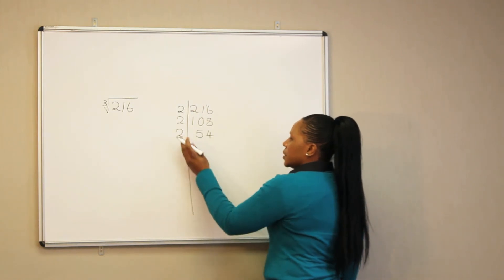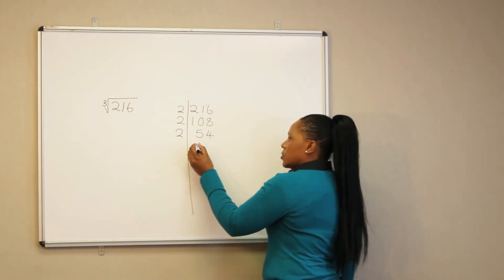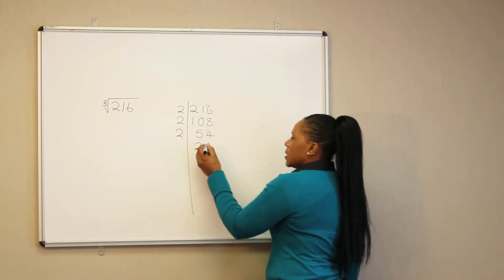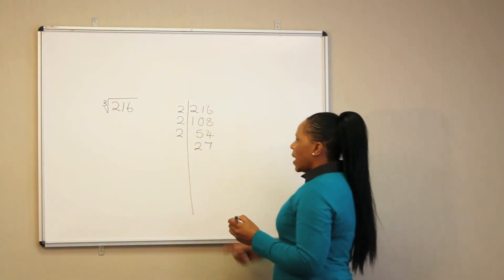We can still use 2. 2 into 5, it goes 2 times, remainder 1. 2 into 14, it goes 7 times. In this case, we have 27, so we are supposed to use 3.